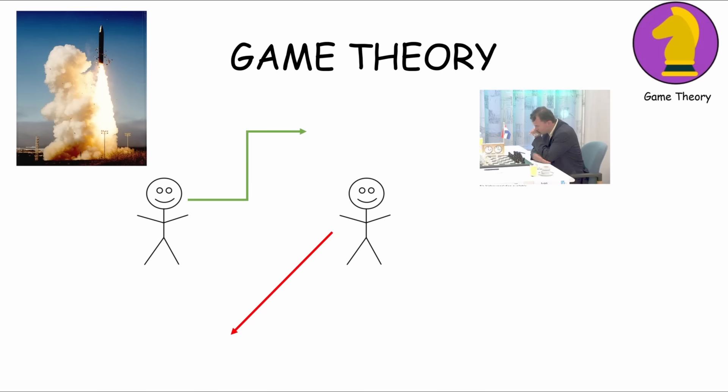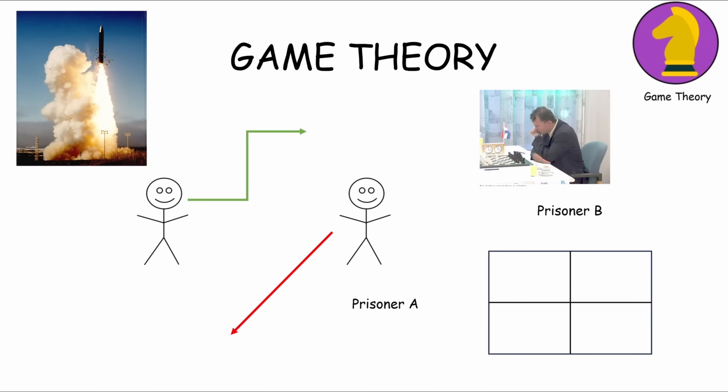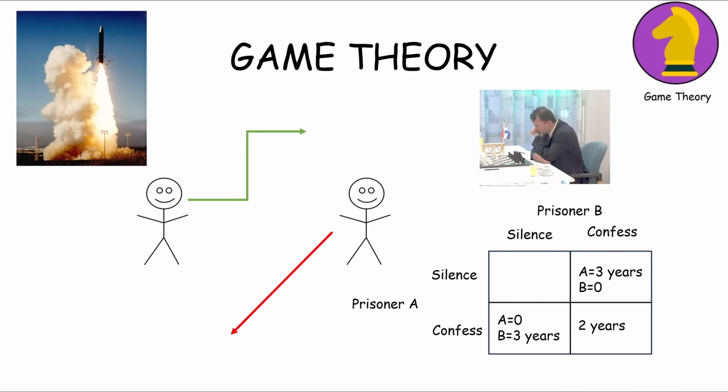Two individuals are arrested and accused of a crime. They are held in separate cells and cannot communicate. The authorities offer each prisoner a deal: if one stays silent while the other confesses, the one who confesses gets a reduced sentence and the one who stays silent gets a harsher sentence. If both confess, they receive moderate sentences.